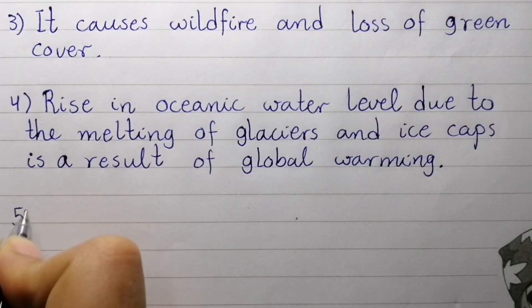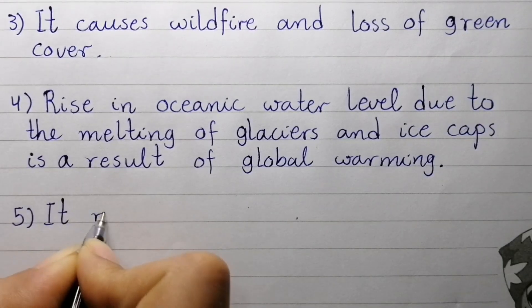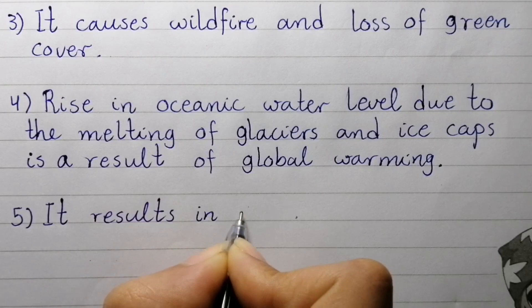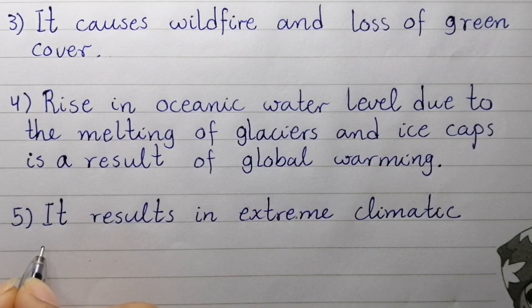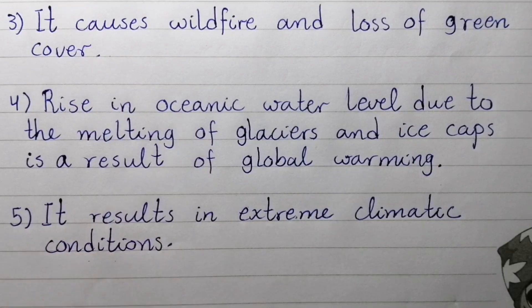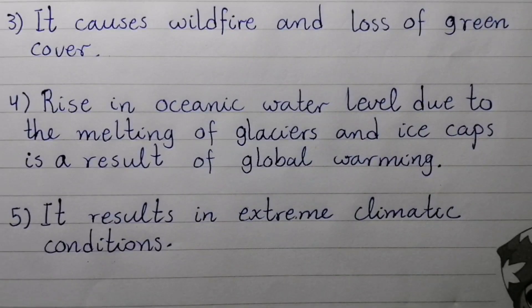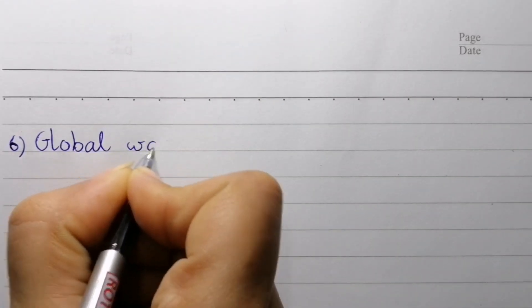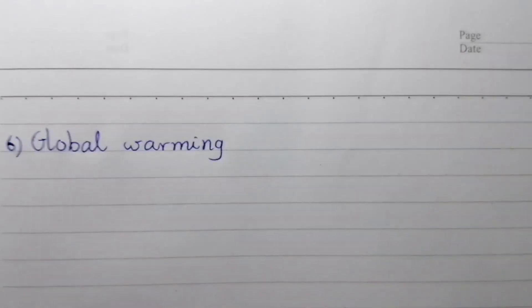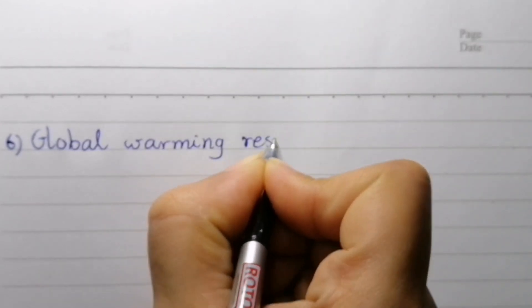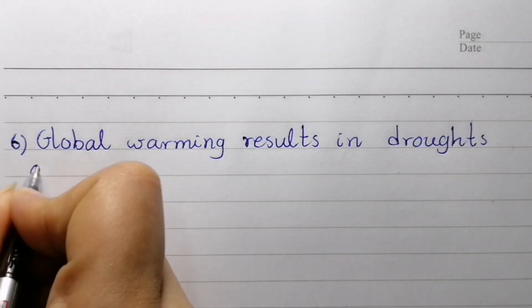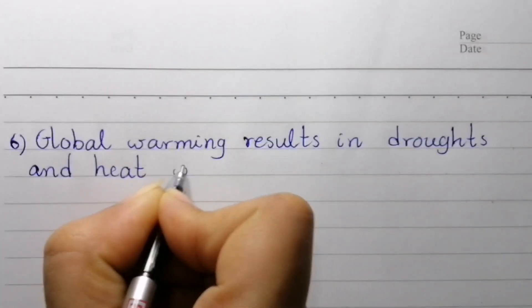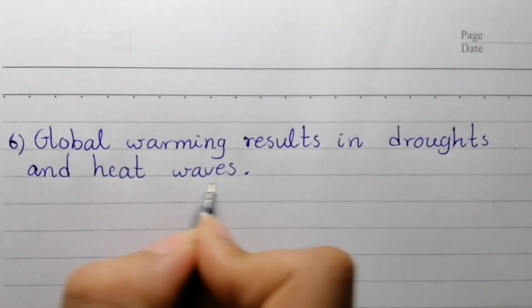Point number five: It results in extreme climatic conditions. Point number six: Global warming results in droughts and heat waves.